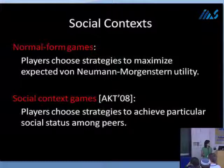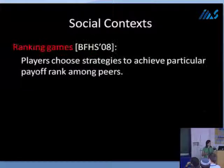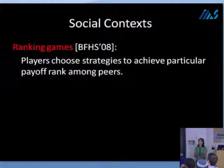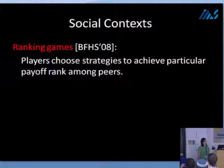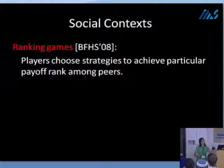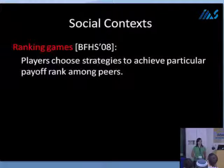In this paper, we consider a special case called ranking games — like the marathon runner example. This was studied first by Brent Fisher, Harenstein, and Schaum in 2008. In ranking games, a player cares about the rank of his utility with respect to those of his peers. We assume that people weakly prefer a lower rank, and they assign particular cardinal utilities to different ranks. The paper shows that it's NP-hard to compute Nash equilibria for more than three players in these ranking games.